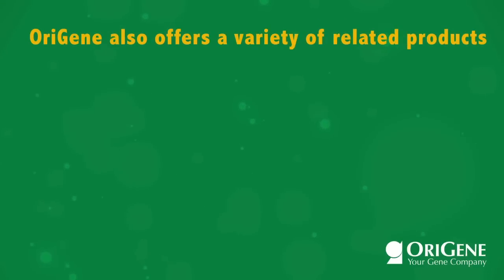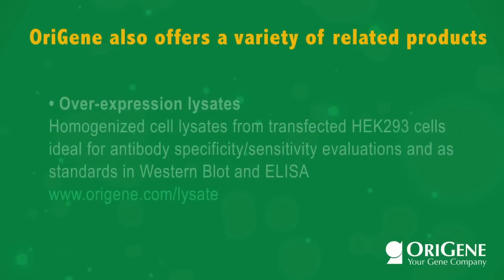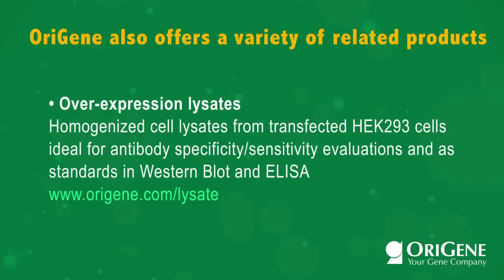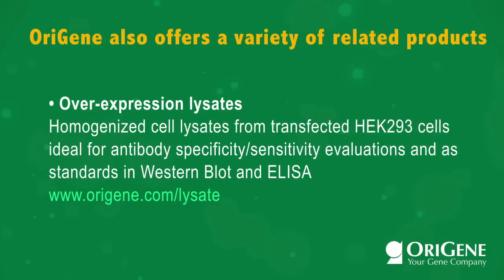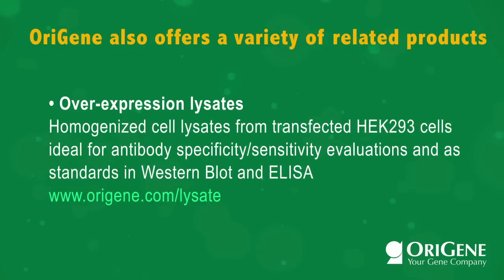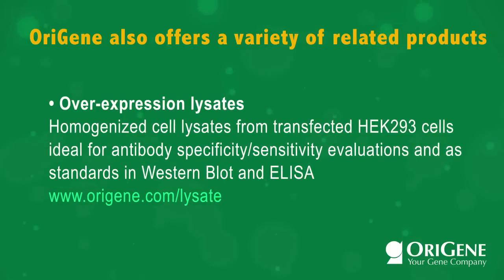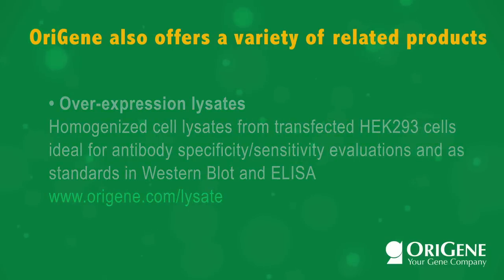In addition to full-length human proteins, Orygene also offers a variety of related products, including Overexpression Lysates — homogenized cell lysates from transfected HEK-293 cells, ideal for antibody specificity and sensitivity evaluations and as standards in Western blot and ELISA.